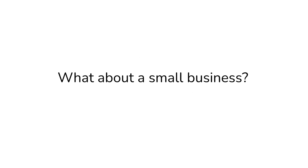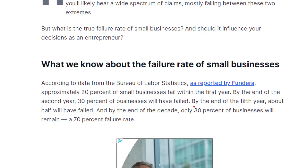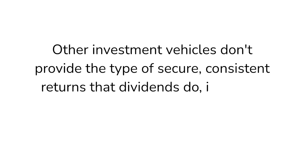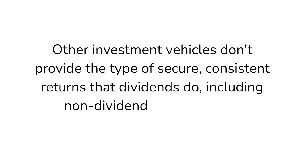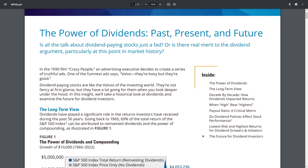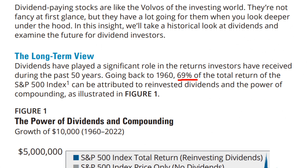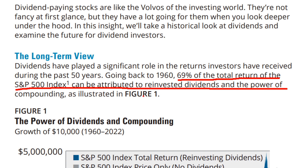What about a small business? About half of small businesses fail in the first five years and require significant amounts of sweat equity to get rolling. Other investment vehicles don't provide the type of secure, consistent returns that dividend stocks do, including non-dividend paying stocks. In fact, a 2023 report by Hartford Funds found that since 1960, 69% of the total return of the S&P 500 index can be attributed to reinvested dividends and the power of compounding.